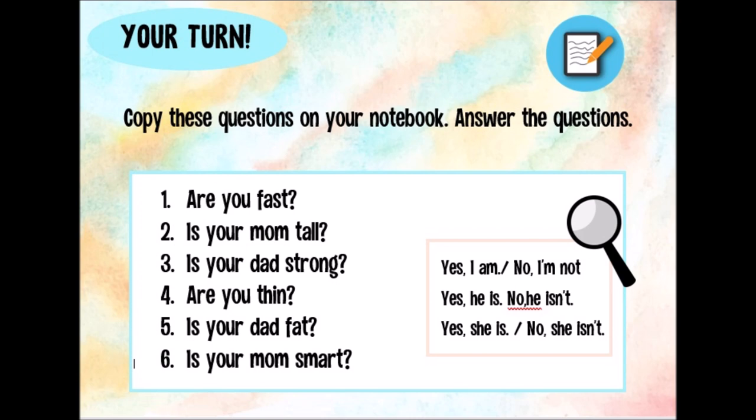So now it's your turn. You have to copy these questions in your notebook and answer them. I'm going to read the questions for you. Number one, are you fast? Number two, is your mom tall? Three, is your dad strong? Four, are you thin? Five, is your dad fat? Six, is your mom smart?